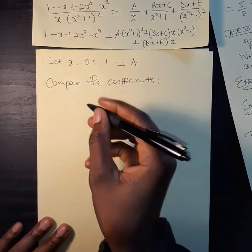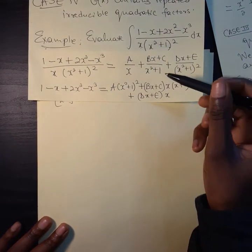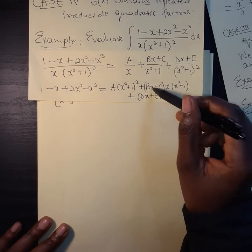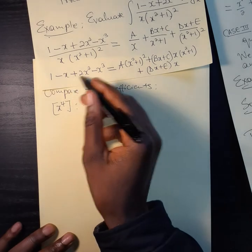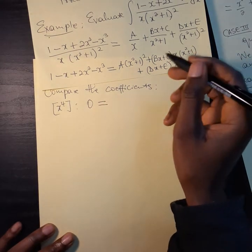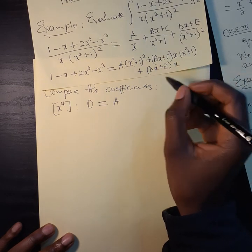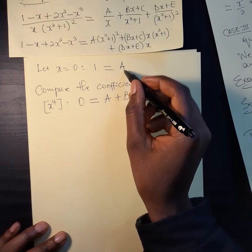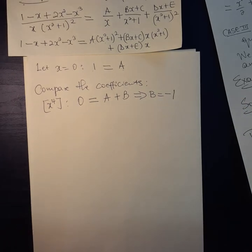Now we compare coefficients. Looking at the largest power, which is x to the power 4: on the left-hand side the coefficient is 0. On the right-hand side, expanding gives A from the first term and B from the second term. Since A equals 1, we get 0 equals A plus B, which implies B equals minus 1.